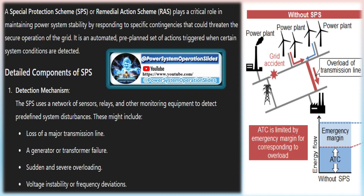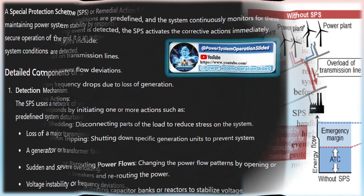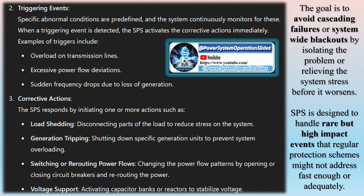During contingency conditions, SPS can be used as a tool for maintaining overall satisfactory operation of the power system. SPS can be installed to maintain frequency deviation during post-contingency, referred to as Frequency Control SPS, or for preventing the system from voltage collapse or overloading of thermal limits, referred to as Network Control SPS.